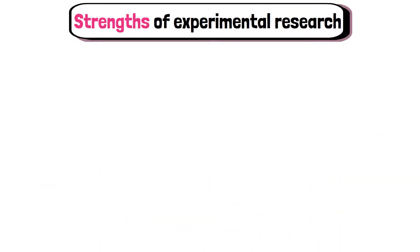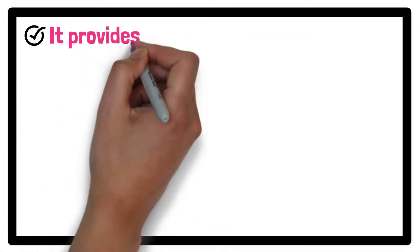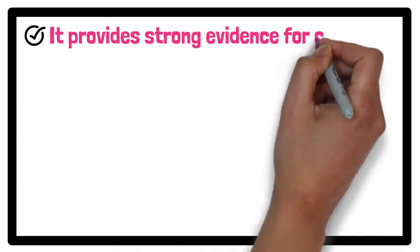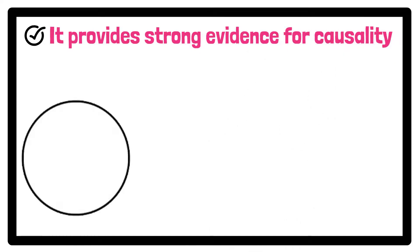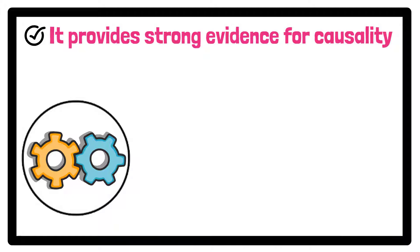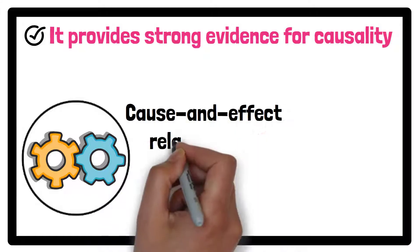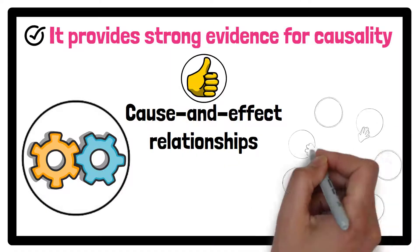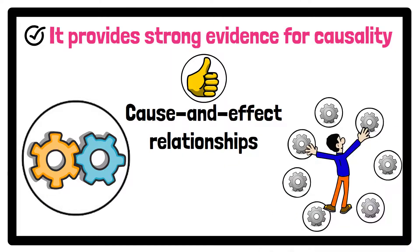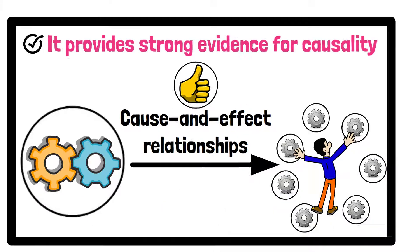Now let's look at some strengths of experimental research. One strength is that it provides strong evidence for causality. Because experimental research involves direct manipulation of variables, it allows researchers to identify cause and effect relationships with a high degree of confidence. This makes it one of the most reliable methods for testing hypotheses about how one factor affects another.